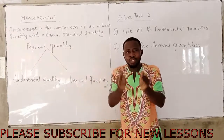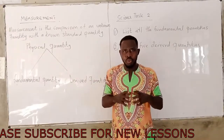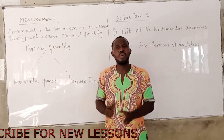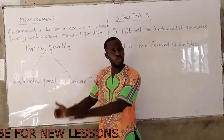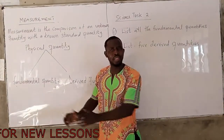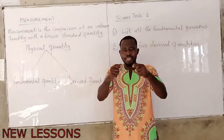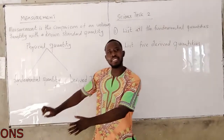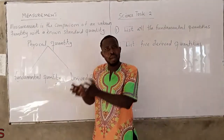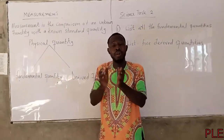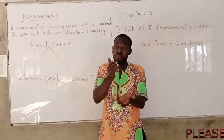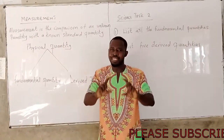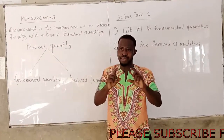With that known quantity, we can get to know an unknown quantity. So when you take the measuring tin, you will fetch some quantity of rice and then say this is one tin.